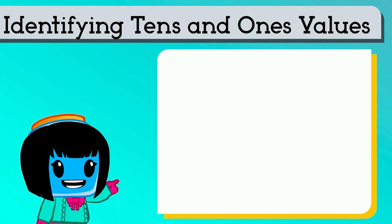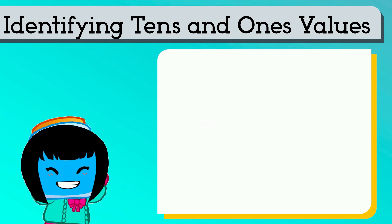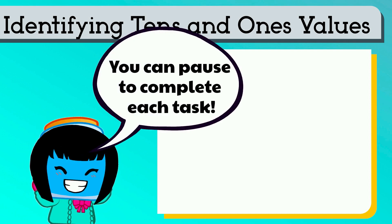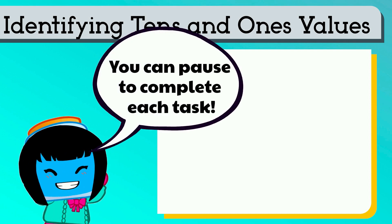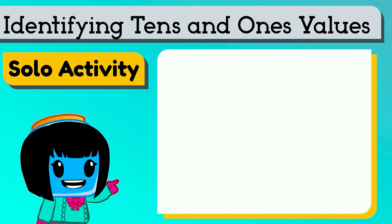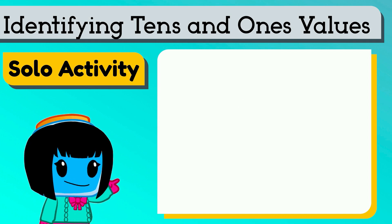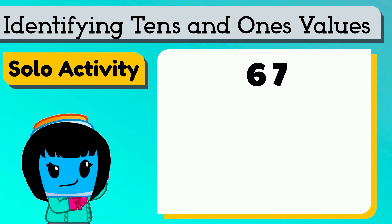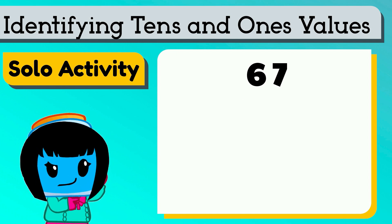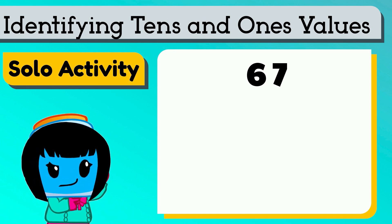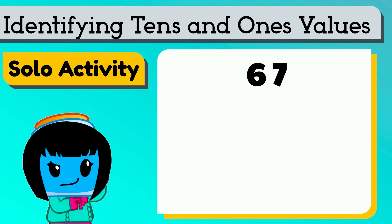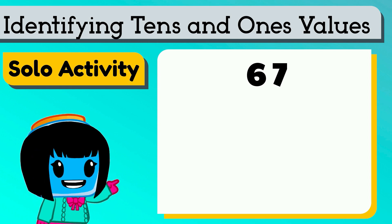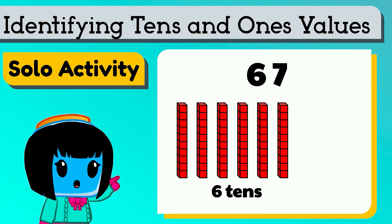Let's keep practicing with place value. Push pause while you complete each task. You can do this on your own. Let's practice the number sixty-seven. How could you show sixty-seven using place value?